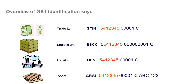Here is a quick overview of the GS1 identification keys supported by our system. At the top we have the individual trade item identified by the Global Trade Item Number. Then we have the logistic unit identified by the SSCC or Serial Shipment Container Code. We also have location identification through the Global Location Number, and the ability to identify returnable assets such as pallets or containers through the GRAI or Global Returnable Asset Identifier.